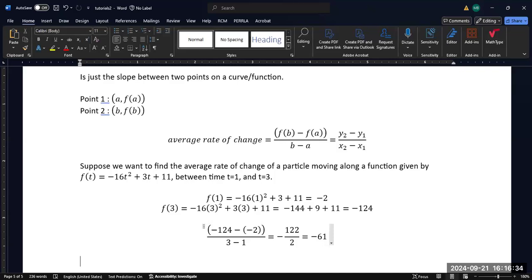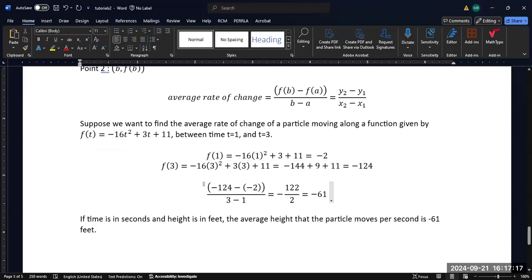And what does that mean in this context? So we think of time in seconds. If time is in seconds and height is in feet, since that would be consistent with the form of our formula, then this is saying that the average height that the ball that we're dropping, the particle, moves per second in this timeframe is -61 feet. So essentially it falls 61 feet per second on average.